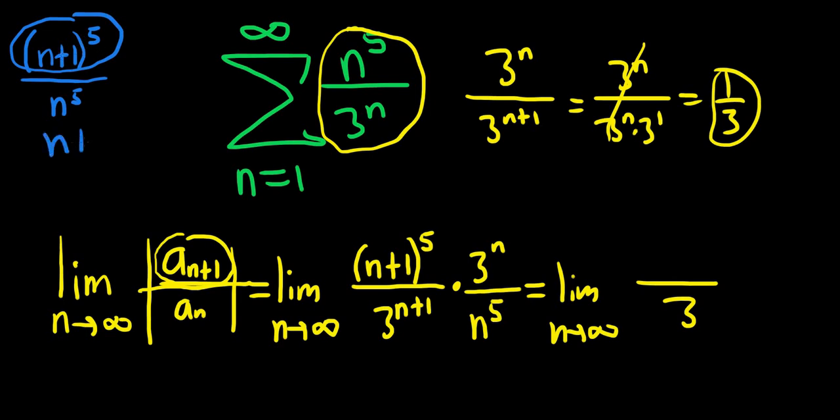However, if you don't like that, you can do something like this. Do a little clever trick like that. And then you see that this limit here on the inside is going to be 1 because it's n to the 1 over n to the 1. And you have a 5 here, so it's just 1 to the 5th.